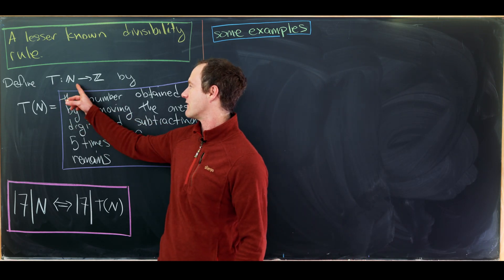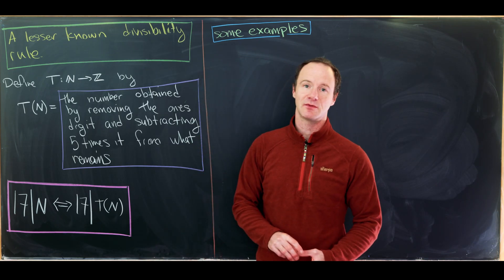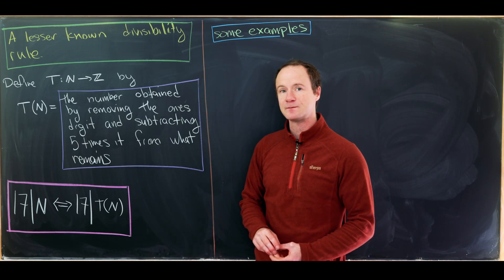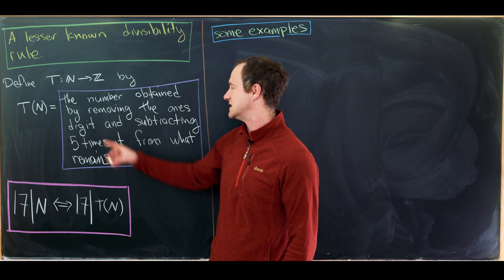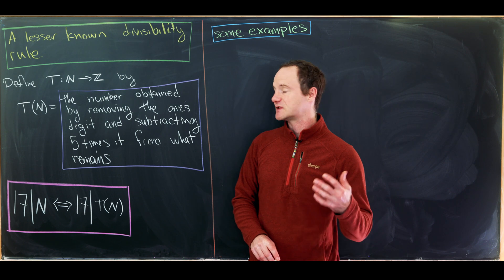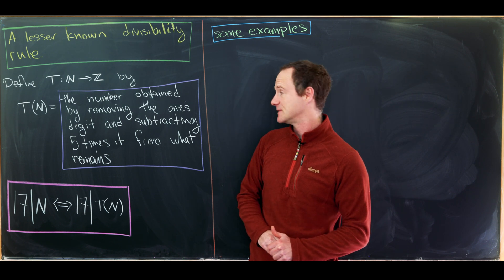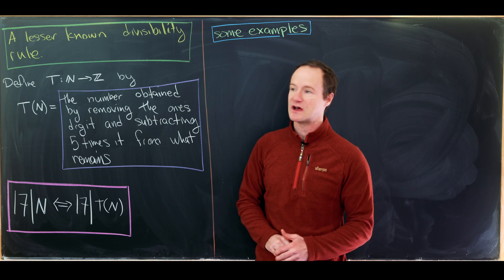We'll call it T. It'll have an input of a natural number and an output of an integer. And what you do is you remove the ones digit from the input, and then you subtract five times this one digit from whatever's left over.